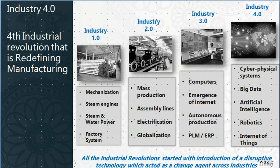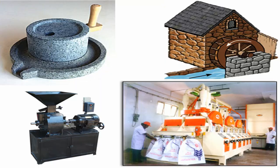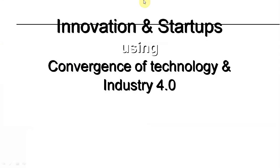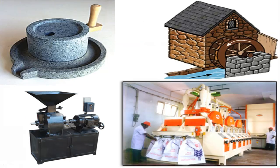These different technologies and the convergence of these technologies are creating new technologies. This is the big development. In this innovative era we are talking about knowledge innovation in Industry 4.0. All the industrial revolutions started with the introduction of a disruptive technology which acted as a change agent. Convergence of technology means we are collecting and combining all technologies to make new technology.